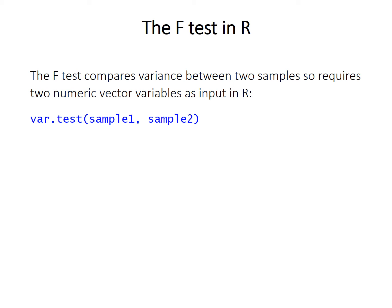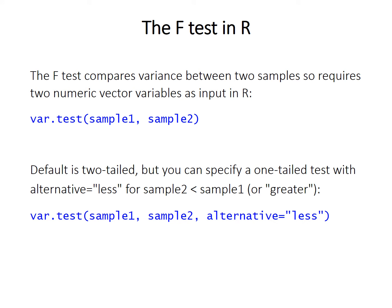The default is to do a two-tailed test, and that's what you're going to do nearly all of the time. But if you do want to specify a one-tailed test, it works in the same way as the t-test function. You can just write alternative equals less or greater after the two input variables. Remember to put the variables first, and you need two of them.